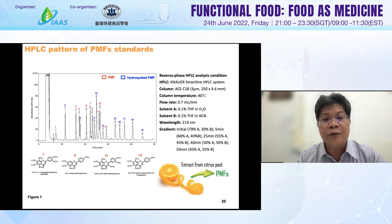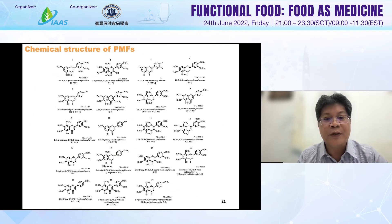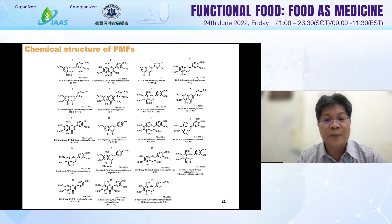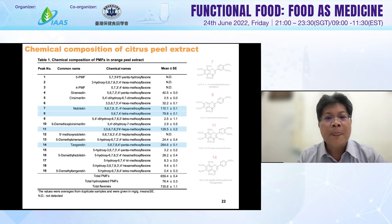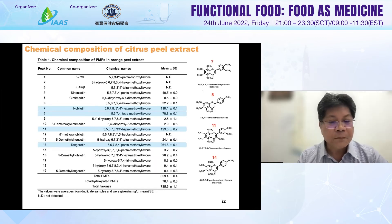The chemical profile was determined using HPLC, showing the different components used. This shows the different kinds of chemical structures in citrus PMF, which contains different compounds. This slide shows the chemical composition of the citrus PMF used in this study.